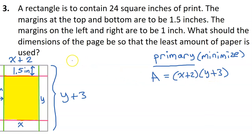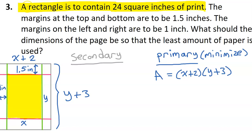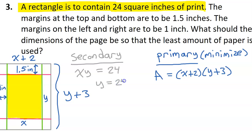That is why we need a secondary equation so that we can make a substitution. The secondary equation comes from the constraint: the rectangle is to contain 24 square inches of print, so the area of the print rectangle is X times Y equals 24. Dividing both sides by X, we get Y equals 24 over X.